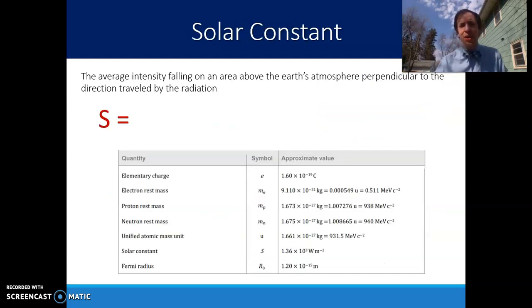This is going to be an important number. We call this number the solar constant. The solar constant is the average intensity that falls on an area of the Earth, or technically above the Earth's atmosphere, that is perpendicular to the direction traveled by the sun. So basically, we can think of this as the maximum intensity that the Earth could receive. We're going to see a little bit that this isn't always going to be that high, but it's a good starting point for us.